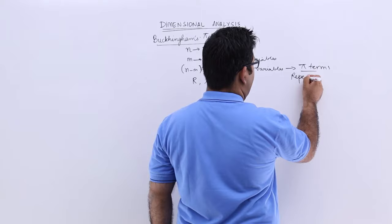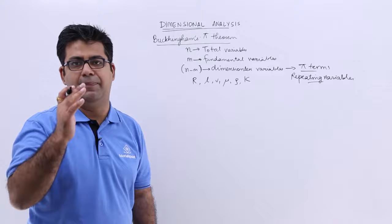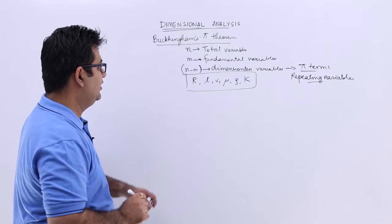So how do you choose a repeating variable? A repeating variable should not be chosen if it is dependent. So if you remember the last question, the resistance force is a function of length of the aircraft, velocity, viscosity of the air, density of the air, and the bulk modulus of the air.